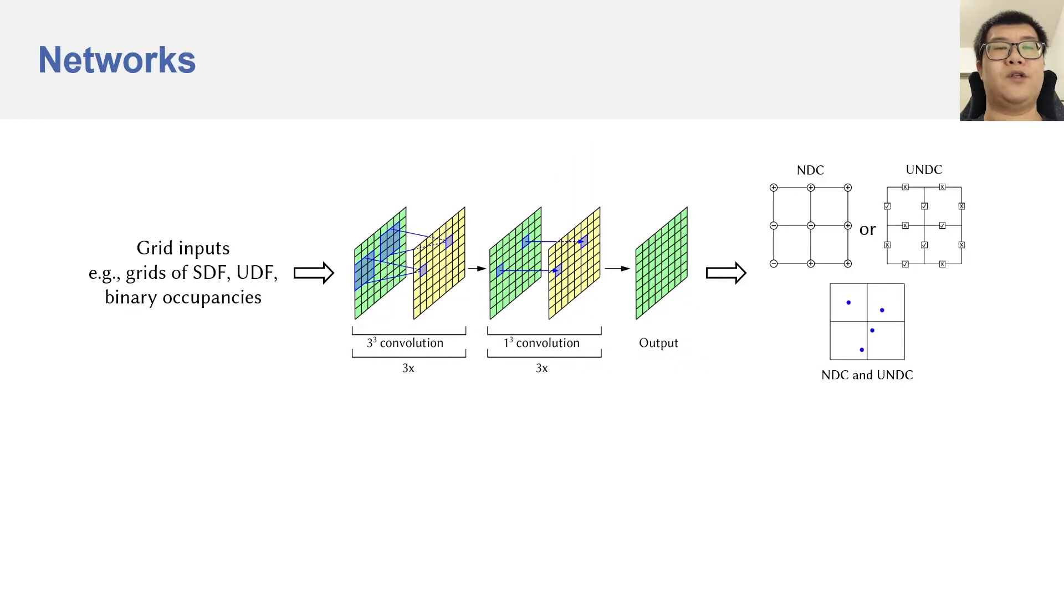Now, I will show you the network architectures. For regular grid inputs, we apply a simple 3D convolutional neural network. It will take a 3D grid as input, and it will output a 3D grid.